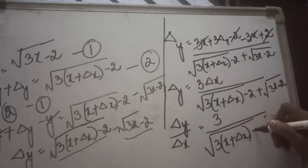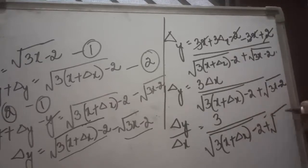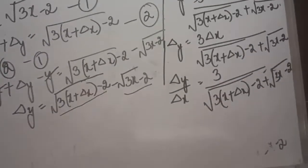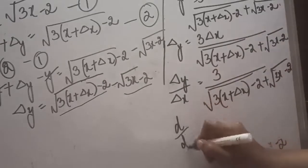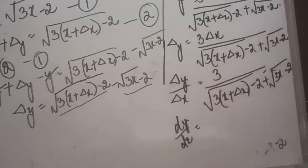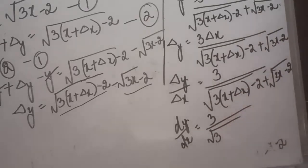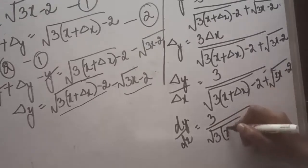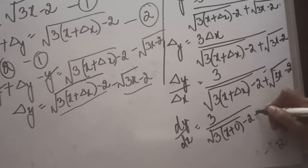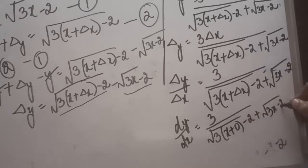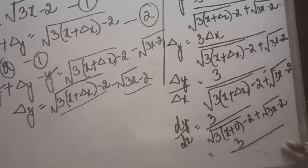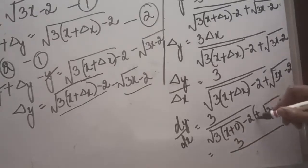Finally, we take the limit as delta x approaches 0. The left hand side converts to dy/dx, which is the differentiation. In the denominator, substituting delta x equal to 0 gives root(3x + 0 - 2) plus root(3x - 2), which simplifies to root(3x - 2) plus root(3x - 2).